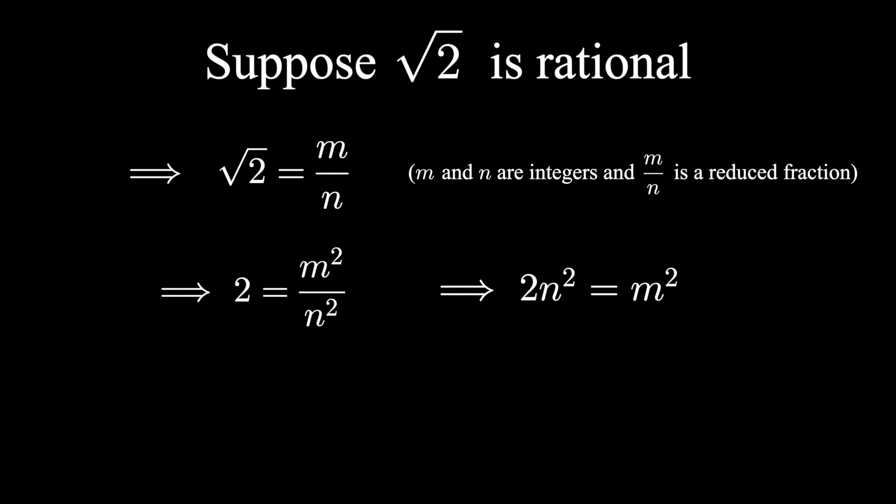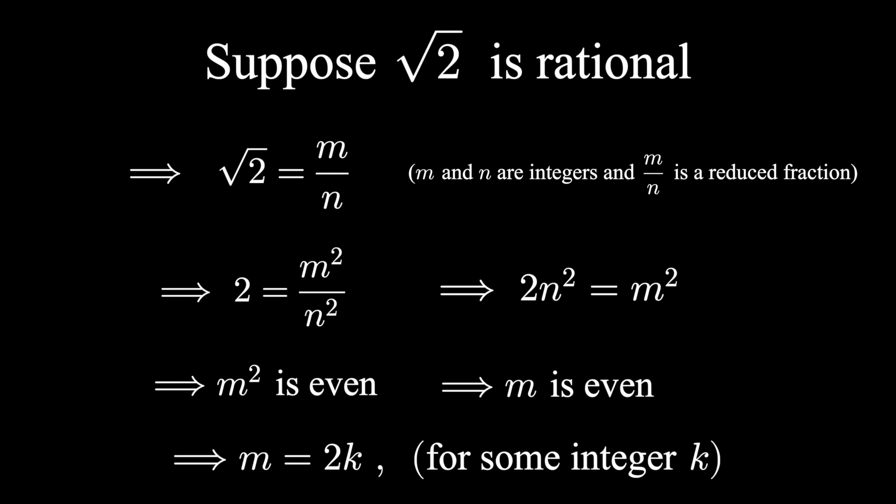Now, if a number can be written as twice an integer, we call that an even number. And through this process, we just concluded m squared is an even number. But if a square of a number is even, the number itself is also even. Let's call m 2k, where k is an integer. This just means m is even.